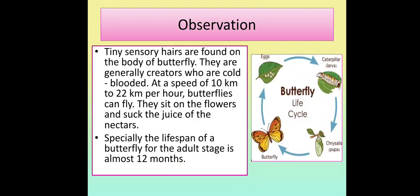Tiny sensory hairs are found on the body of a butterfly. They are generally cold-blooded creatures. Butterflies can fly at a speed of 10 km to 22 km per hour. They sit on flowers and suck the juice of the nectar. The lifespan of a butterfly in the adult stage is almost 12 months.